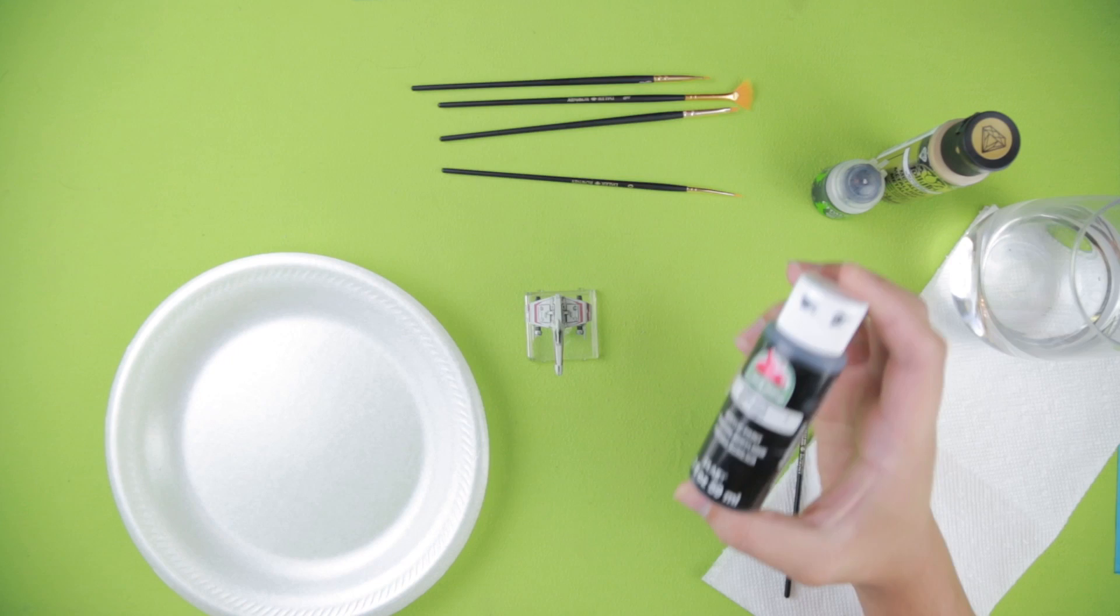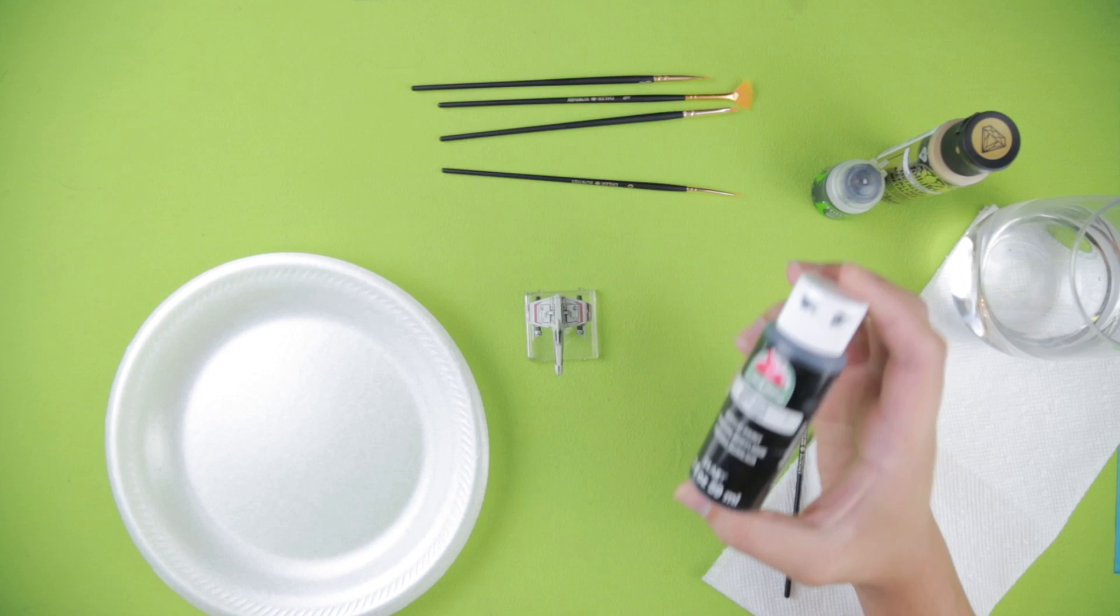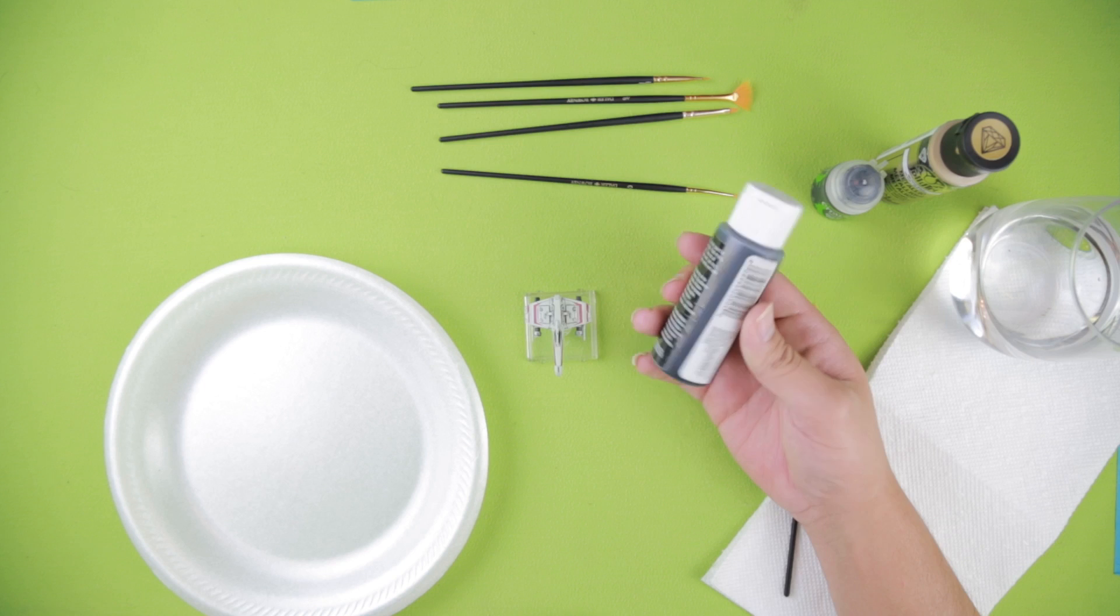I'm going to be using Apple Barrel black regular black acrylic paint, and then I'm also going to be using Folk Art metallic gold paint, and then I'll be doing a wash with Citadel's Nuln Oil.